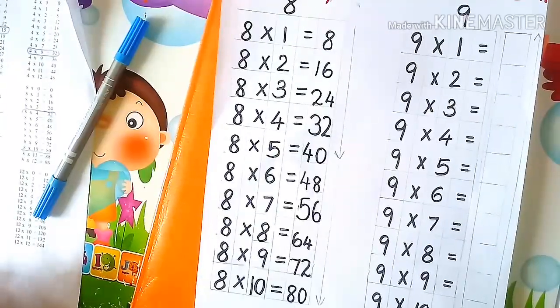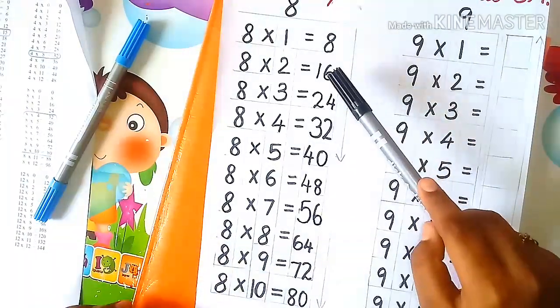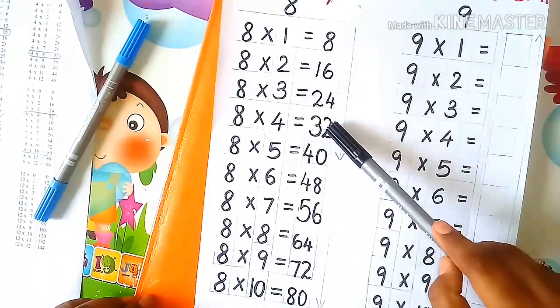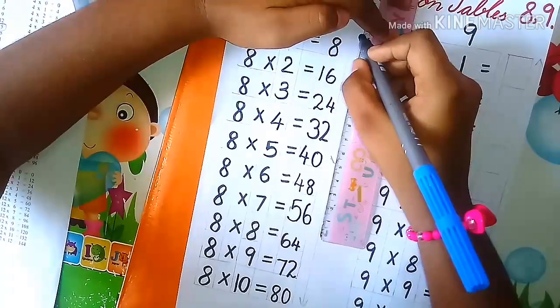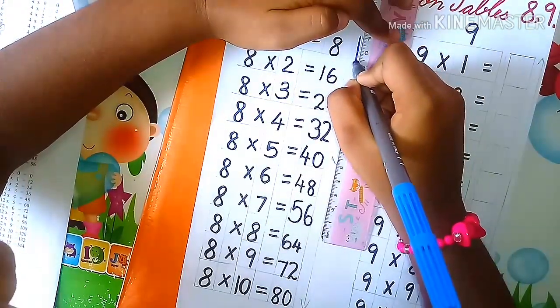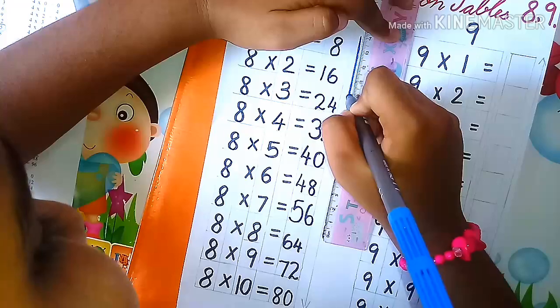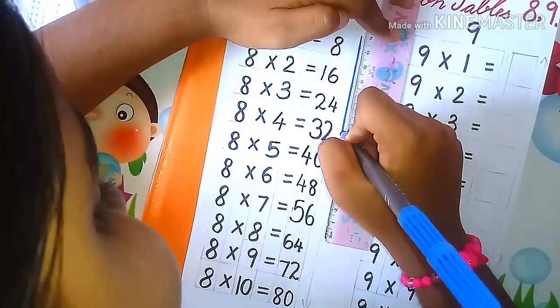So the simple method is you have to write 8, 6, 4, 2, 0. Then you have to write on the other side 1, 2, 3, 4.